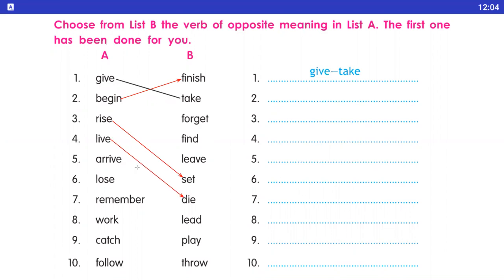Number five: arrive — arrive ka opposite hai leave. Number six: lose — iska opposite hai find. Number seven: remember — remember means yaad karna, opposite is forget, matlab bhool jana. Number eight: work — opposite is play.